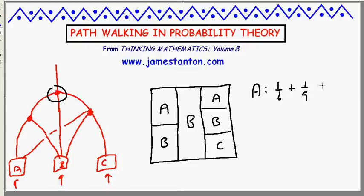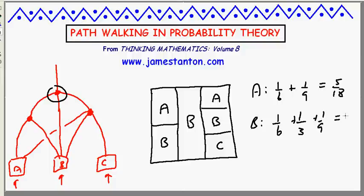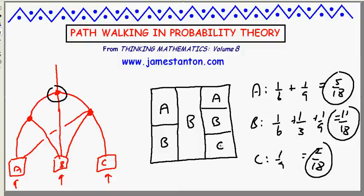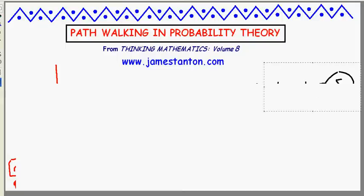That gives five eighteenths for house A. People in house B: one sixth plus a full third plus one ninth, which is eleven eighteenths. And house C gets one ninth, which is two eighteenths. So there are the proportions of people that end up in each house. The square model is very handy - you can have a lot of fun with it. I'll leave the next one as a puzzle.